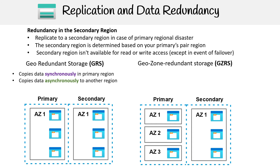Asynchronous means that if you try to read from the second region, all the data might not be there. Synchronous means there's a guarantee that the data is going to be the same, and asynchronous means there's not a guarantee that the data is one-to-one with the original.